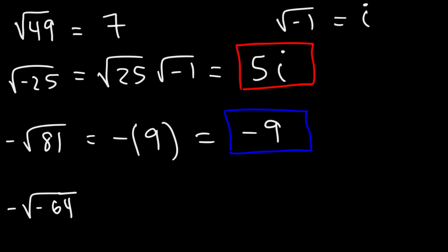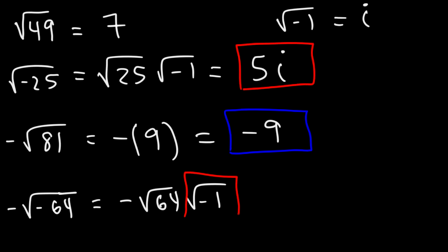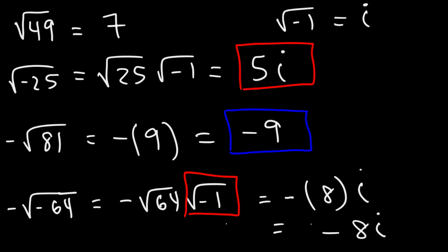Now what about negative square root of negative 64? If you have a negative sign inside a square root, it's best to remove it by writing the square root of negative 1 next to it, which we can replace with i. The square root of 64 is 8 because 8 times 8 is 64, so the final answer is negative 8i.